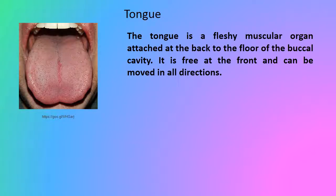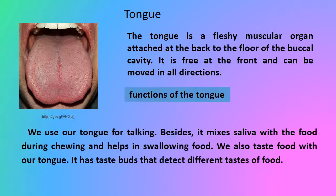The tongue is a fleshy muscular organ attached at the back to the floor of the buccal cavity. It is free at the front and can be moved in all directions. We use our tongue for talking. It mixes saliva with the food during chewing and helps in swallowing food. We also taste food with our tongue — it has taste buds that detect different tastes of food.